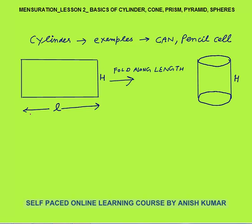Now, how is the cylinder formed? You have to take a rectangular sheet. Here I have taken a rectangular sheet whose length is l and height or breadth is h. If you fold this rectangle, you will get a cylinder. At home, take an A4 sheet of paper and fold it along its length — you will get a cylinder. The height will remain the same and your length will become the circumference of the circle, so l becomes 2πr.